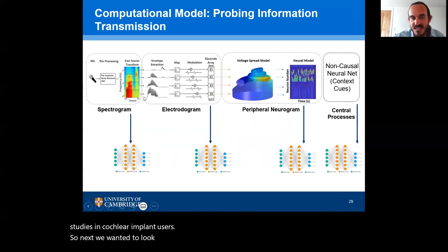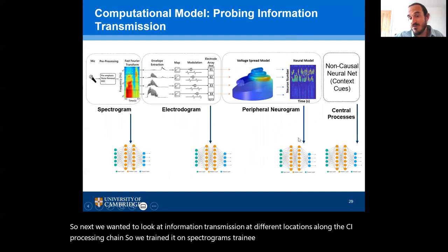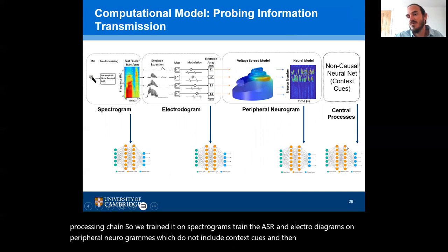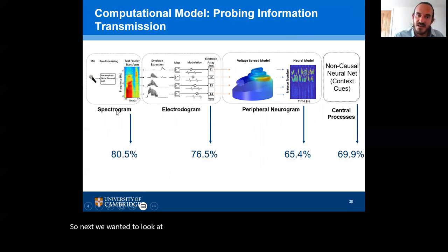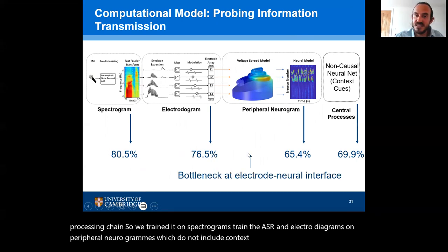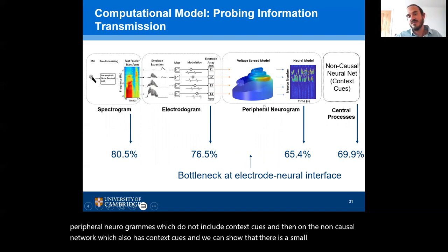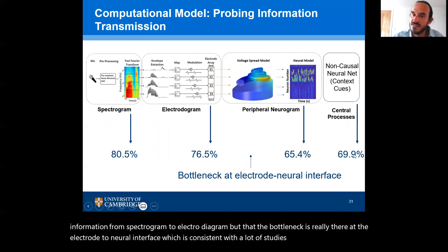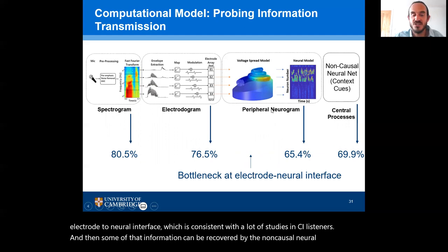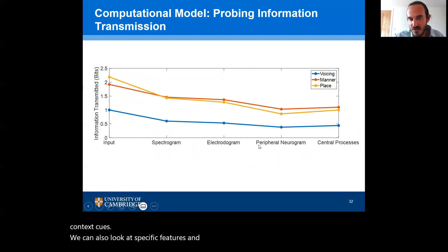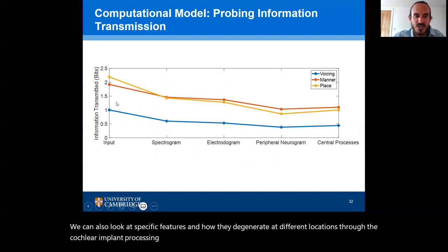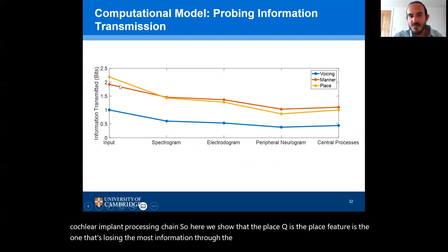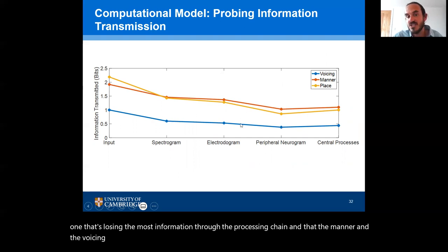We also looked at information transmission at different locations along the CI processing chain, training the ASR on spectrograms, electrodograms, peripheral neurograms without context cues, and then on the non-causal network with context cues. There is a small degradation of information from spectrogram to electrodogram, but the bottleneck is really at the electrode-to-neural interface, which is consistent with many studies in CI listeners. Some of that information can be recovered by the non-causal neural network with context cues. Looking at specific features, the place cue loses the most information through the processing chain, while manner and voicing lose a similar amount to each other. For all features, the electrode-to-neural interface is the main bottleneck.